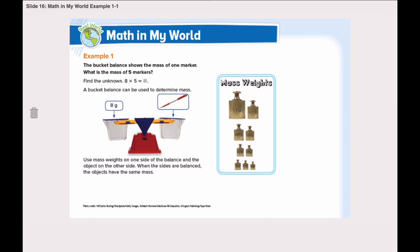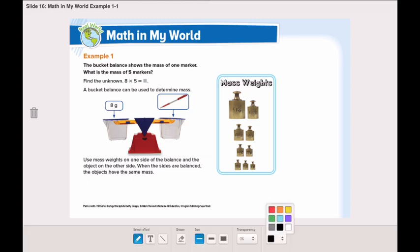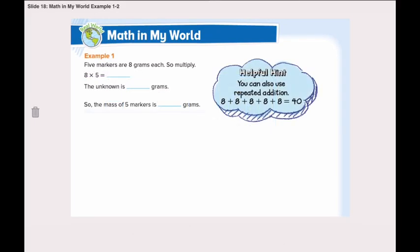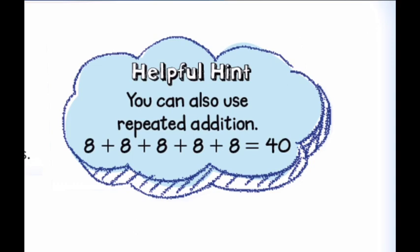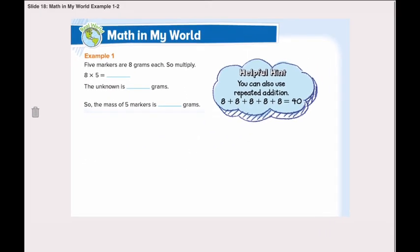We need to find what is the mass of 5 markers. So we have the same amount, which is 8 grams, repeated 5 times. So we will use multiplication. We will find the unknown 8 multiplied by 5. Here in the book we have our helpful hint. You can also use repeated addition. As we said, 8 grams repeated 5 times will help us in calculating the total mass of the 5 markers.